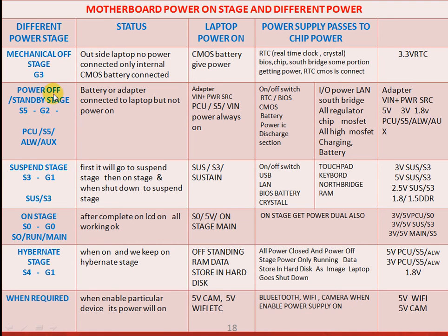Stage S5/G2 is the power off standby stage — PCU S5 always. The battery or adapter is connected to the laptop but it is not powered on. The adapter signal WIN or POWER_SRC — the name differs by board. PCU and always power, PCU S5, WIN — these are the main powers. The PCU S5 supply turns on and gives power to the on/off switch, RTC, BIOS, CMOS battery, power IC, discharge section, IO power lens, south bridge — all these ICs get supply.